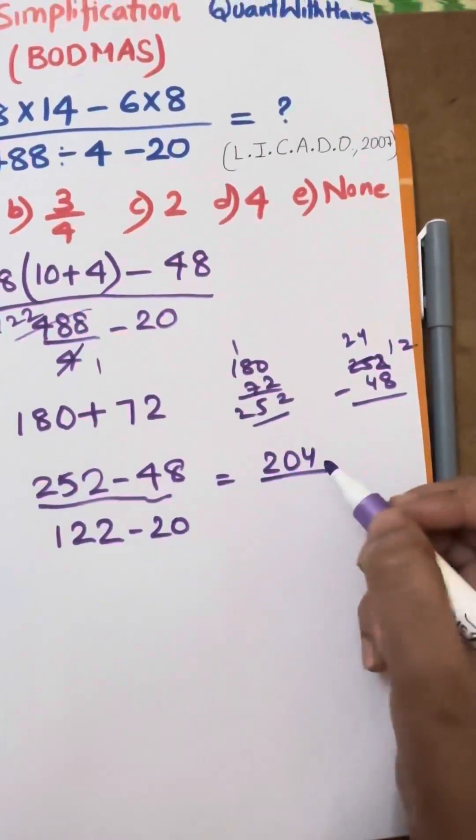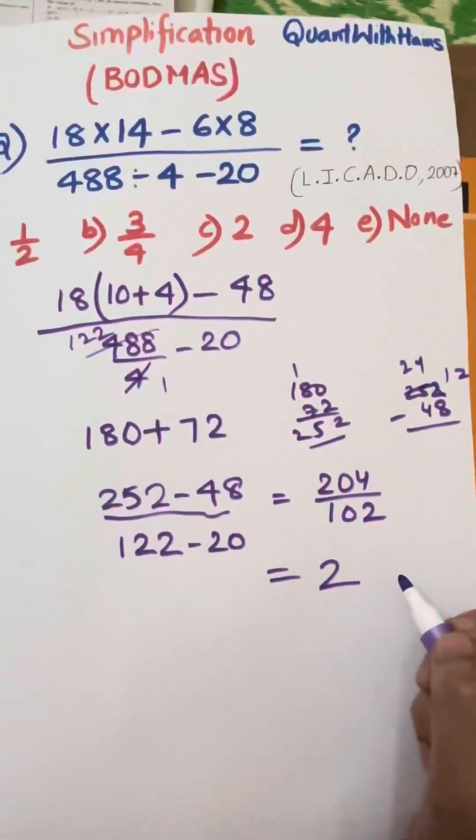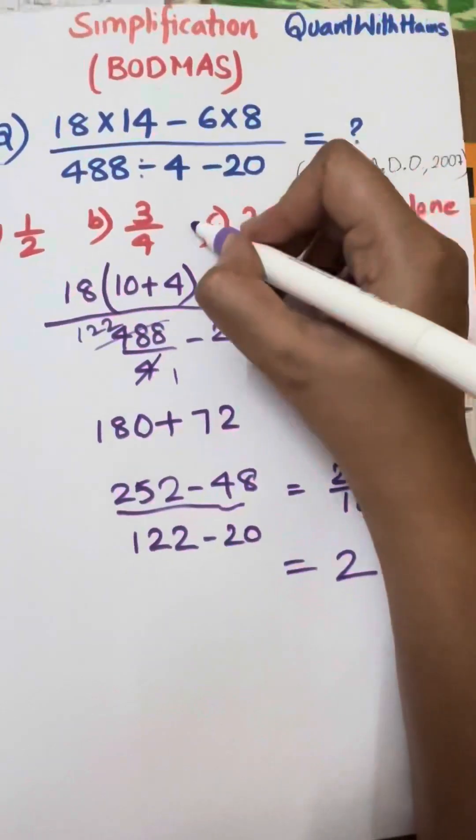204 divided by 102, which equals 2, which is option C.